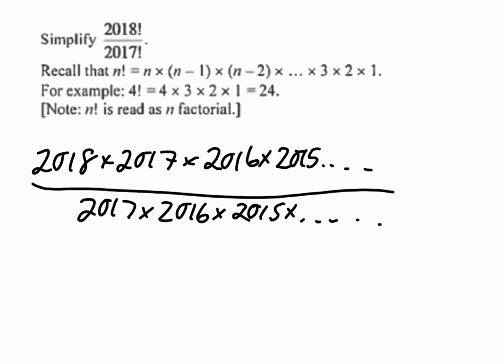Well, very quickly, you can see that the top and bottom of this fraction have some things in common. Like, I could cancel out the 2017s, the 16s, the 15s, and so on. And really, all I'm left with is 2018. So if you just read the definition and applied it, this is actually quite a straightforward question.